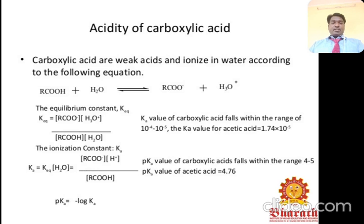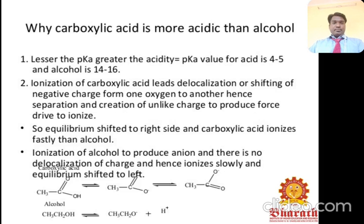The Ka is equal to [RCOO⁻][H⁺] / [RCOOH]. The pKa value of carboxylic acid falls within the range of 4 to 5. Carboxylic acid is more acidic than alcohol because the pKa of carboxylic acid is 4 to 5, while the pKa of alcohol is 14 to 16.